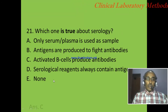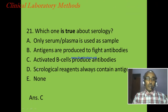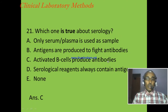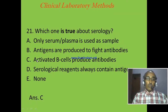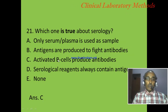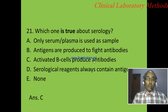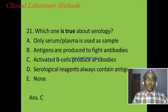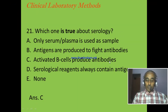The correct answer is C: activated B cells produce antibodies. There are two types of lymphocytes — B cells and T cells — and B cells are responsible for producing antibodies when they are activated by antigens.